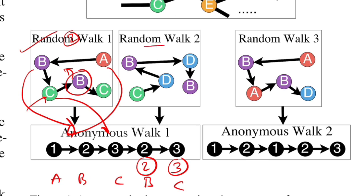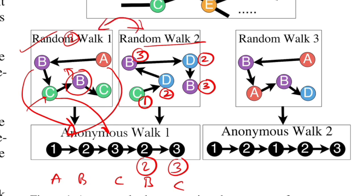Let's see another example. If the random walk goes C, D, B, D, B — C is first (1), D is second (2, different node), B is third (3, different again). Then D, already visited at position 2, so we put 2. Then B, already visited at position 3, so we put 3. Our anonymous walk pattern is again 1, 2, 3, 2, 3 — the same as the first example. This shows a similarity: once you discard node identity and only track whether you've visited a node and at what index, different random walks over different subgraphs can yield the same anonymous walk pattern.